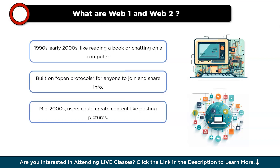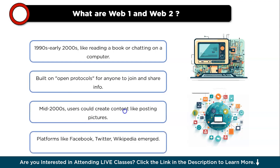As time went on, people started using the internet for more things like e-commerce and research, but it was mostly a one-way street with people reading content. Then came Web 2, an upgrade to the playground in the mid-2000s. With Web 2, people could create their own content — posting pictures, sharing stories, and writing on blogs. Companies like Facebook, Twitter, and Wikipedia made it easy to create and share, but users often didn't realize they were giving away personal information in exchange.